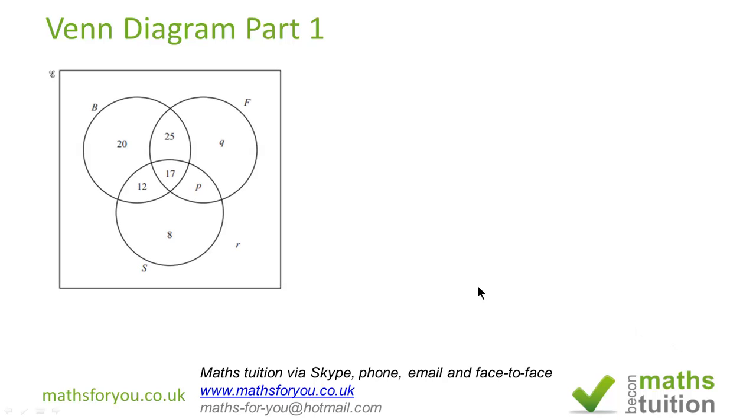So far we found the value of P, which is 5, the value of Q, which is 12, and the value of R, which is 1. Now do not confuse the 12 from Q with the 12 which is the intersection of basketball and swimming. Watch out for that.